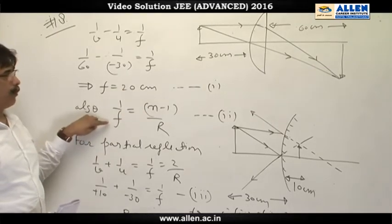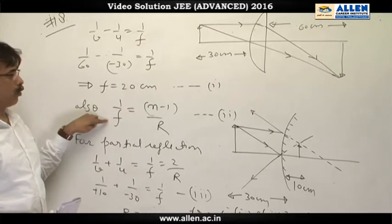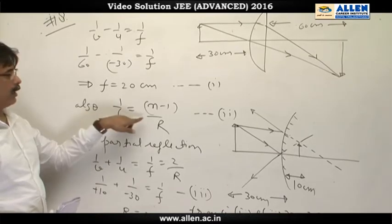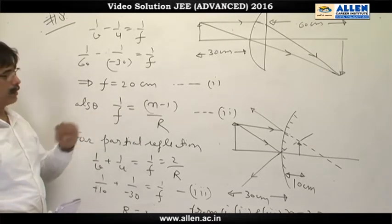Also, for a plano convex lens, focal length is given by n minus 1 by R. Next, we consider the image of partial reflection, which is a faint image.